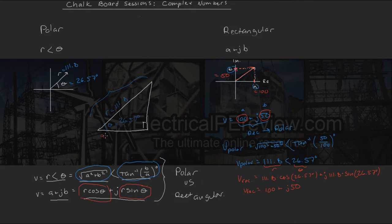Our real component, a, would be a length of 100, which is this length here, and our imaginary component on our j-axis, b, would equal 50, which is this length right here.